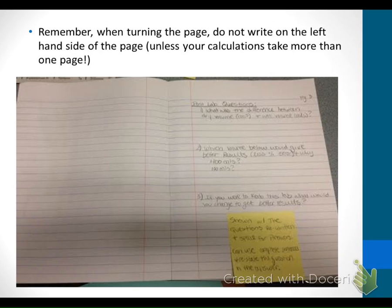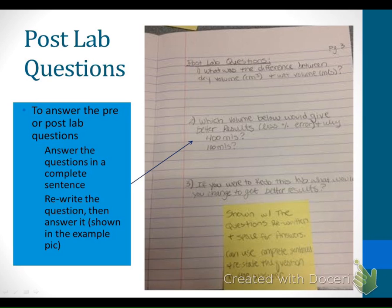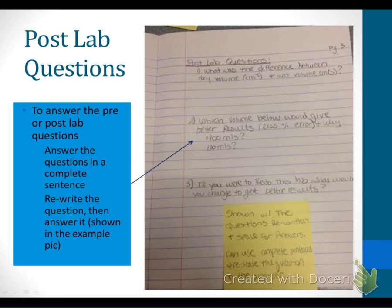Remember, when turning the page, don't write on the left-hand side. Here's an open-page example — since I ran out of room, I'm doing my post-lab questions on the next page. For post-lab questions, you're either going to answer them in a complete sentence, or rewrite the question and then answer it below — you don't need complete sentences at that point. I've shown an example of questions being rewritten with space to answer below. Go ahead and pause and answer the post-lab questions.